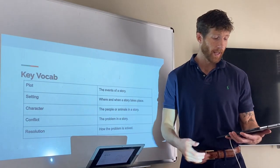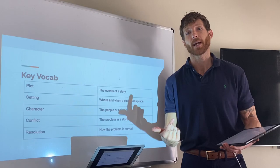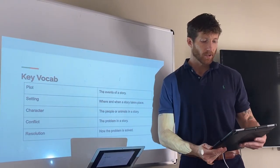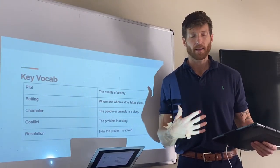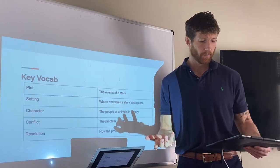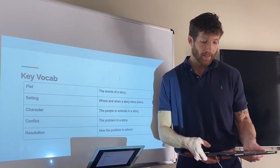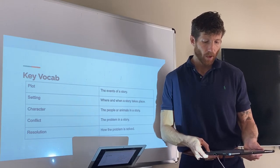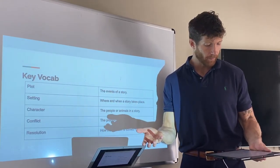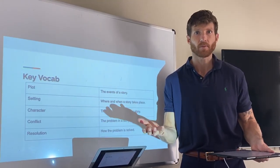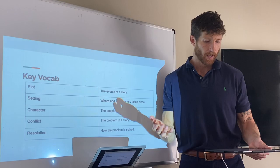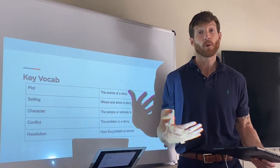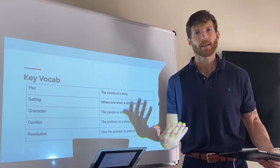These parts, called story elements, include character, setting, and plot. Analyzing a story means figuring out how these elements work together. For example, you can analyze how the setting of a story shapes its plot. A story's plot includes its conflict — a problem the characters must respond to — and a resolution is the way in which that conflict is solved.